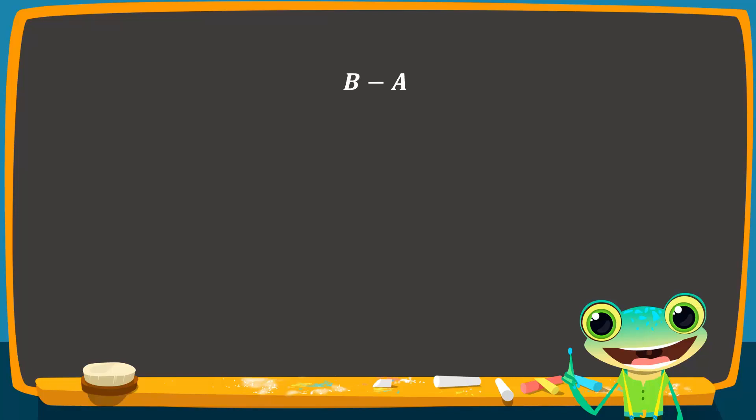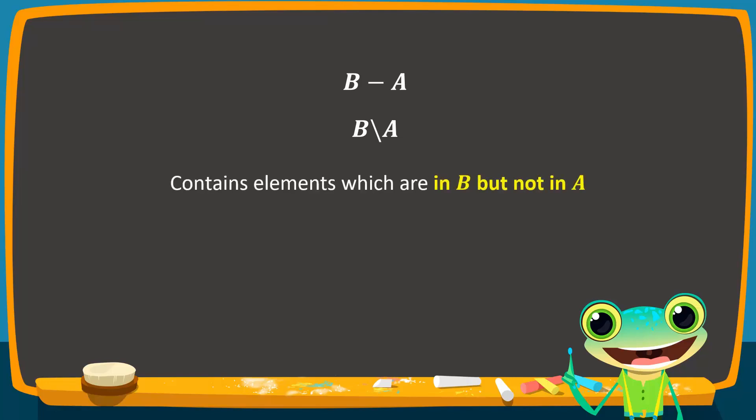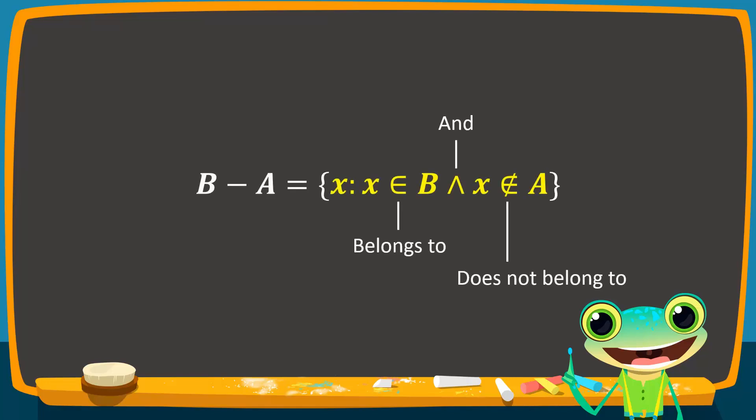Conversely, to subtract set A from set B, we write B difference A, or B backslash A. This is the set of all elements of set B that are not in set A. In the set builder notation, this equals X such that X belongs to set B and X does not belong to set A.